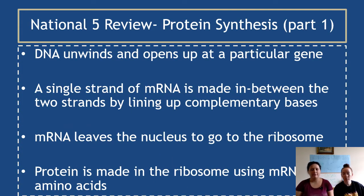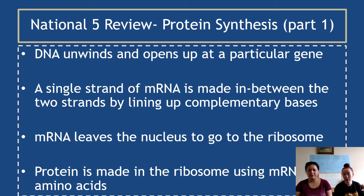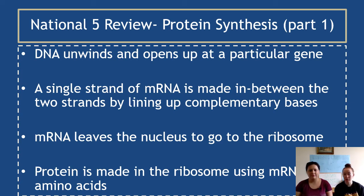The next part of this video, we're going to touch on protein synthesis. Stuff you should know from National 5: DNA unwinds and opens up at the particular gene that codes for the protein to be made — it's not the whole DNA that unwinds, just that particular gene. A single-stranded molecule called mRNA is made between the two complementary strands of DNA through complementary bases lining up. mRNA then leaves the nucleus to go to the ribosome, because DNA can't leave the nucleus but mRNA can. That's the thing that carries the complementary code to the ribosome, and then proteins are made at the ribosome using that mRNA code to bring in amino acids, which are the things that build to become the protein.